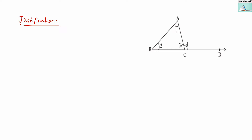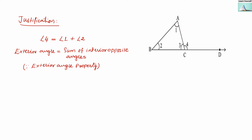Now let us start our justification. Angle 4 is an exterior angle, and it will be equal to the sum of angle 1 plus angle 2. This is based on the exterior angle property, which states that an exterior angle's measure will be equal to the sum of the interior opposite angles. Since angle 4 is the exterior angle, the two interior opposite angles are angle 1 and angle 2. So the sum of these two angles equals the exterior angle's measure.